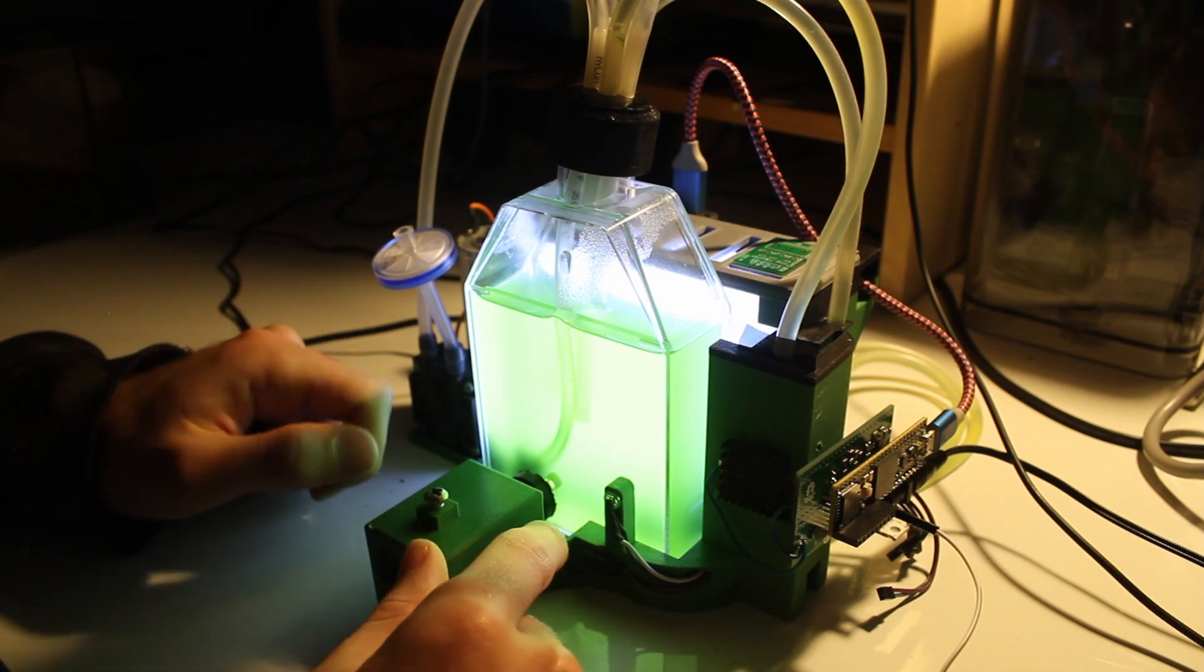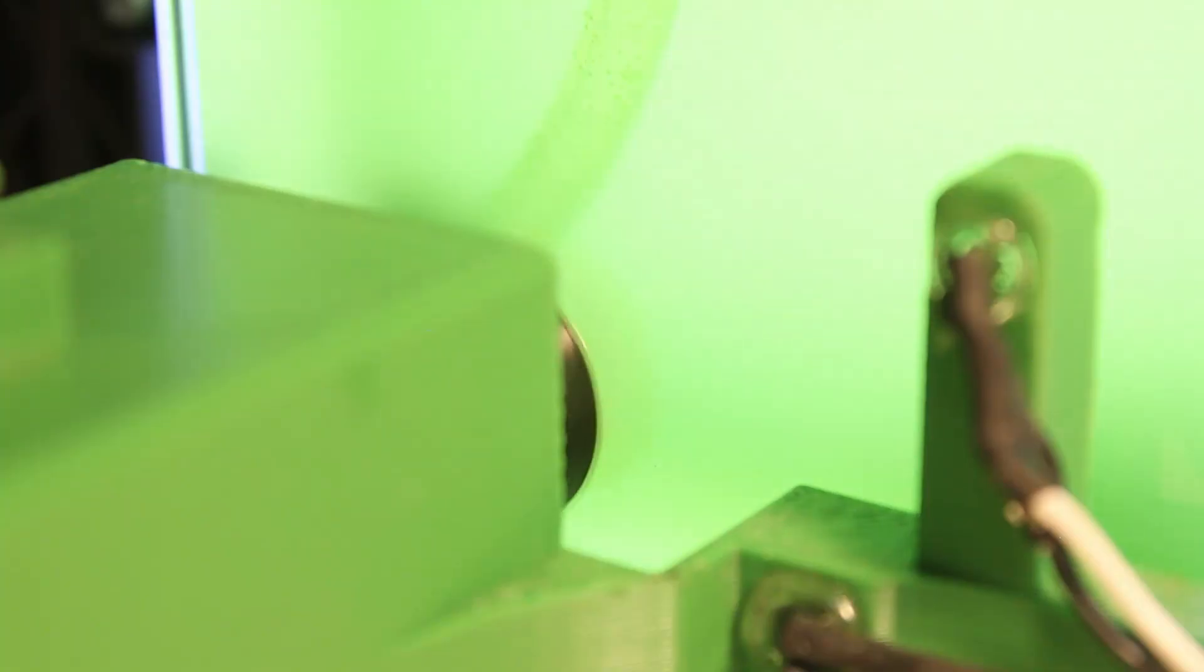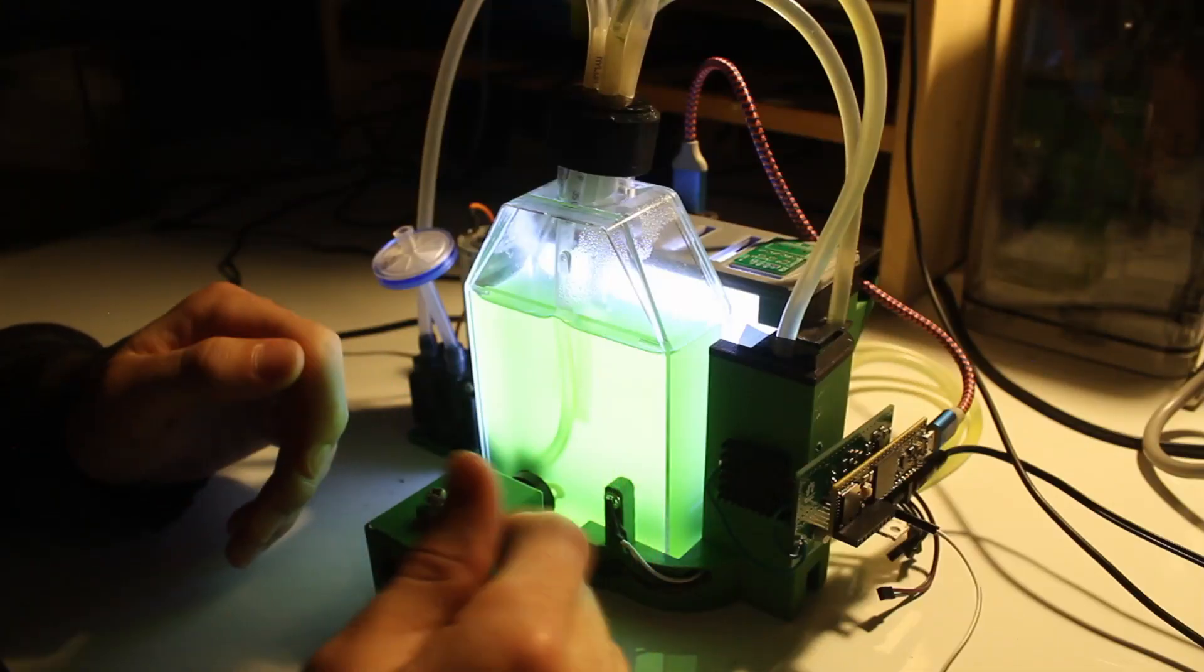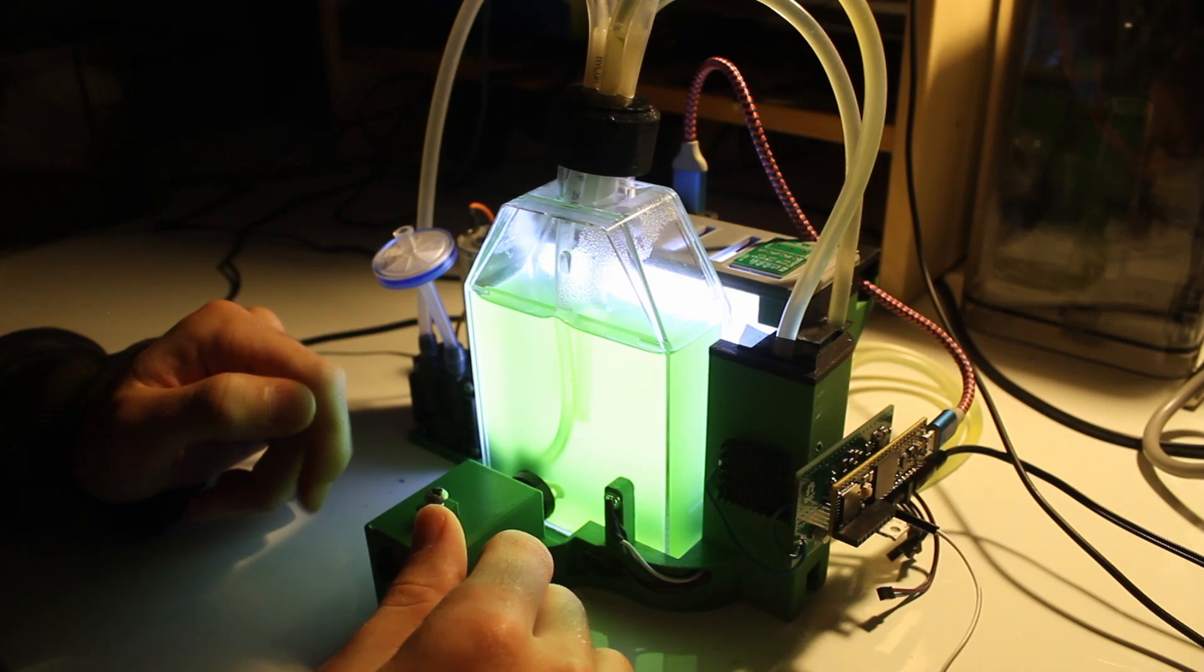We also want to keep the algae suspended in this liquid culture, so we have a mixing motor located on the front of the device just to spin the algae up and keep it from settling on the floor of the culture vessel.